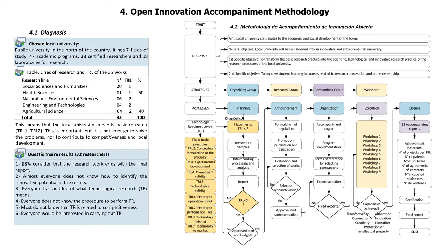Second, according to the conceptual framework, an open innovation support methodology was built. It is composed by four purposes, four strategies, and five processes, which are planning, announcement, organization, execution, and closure.